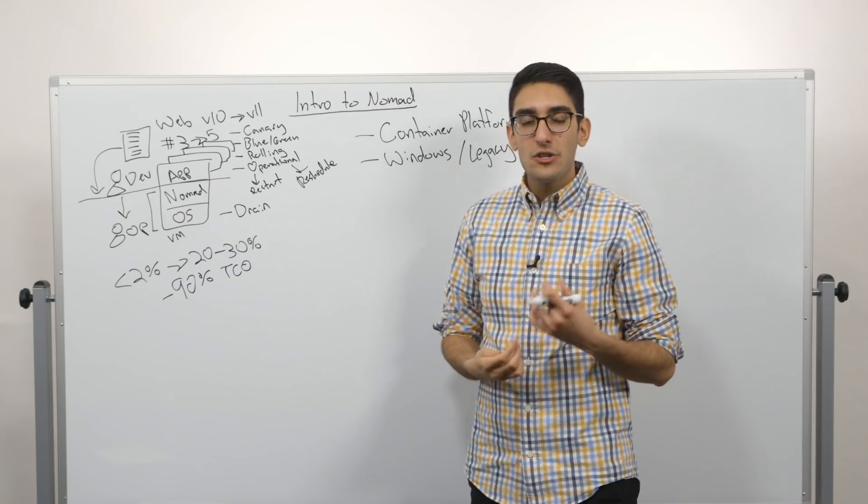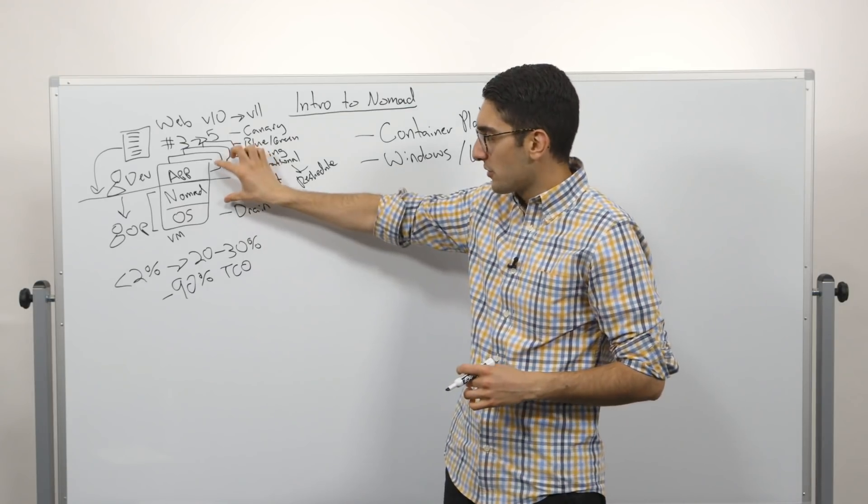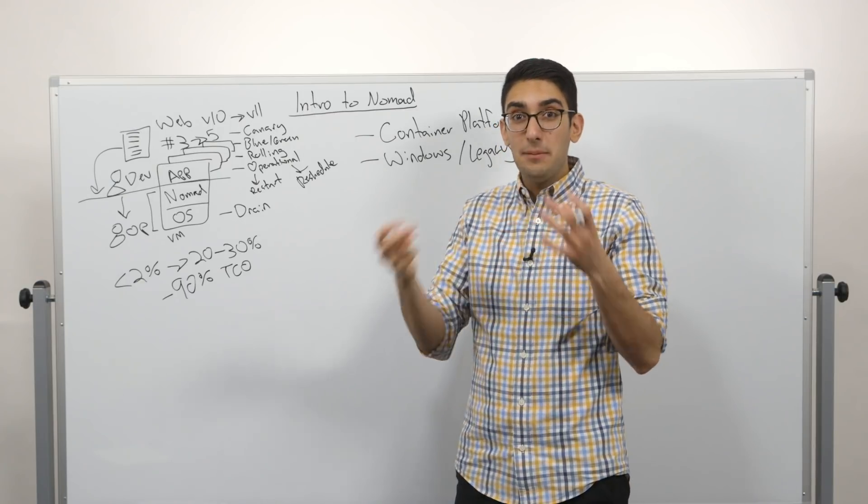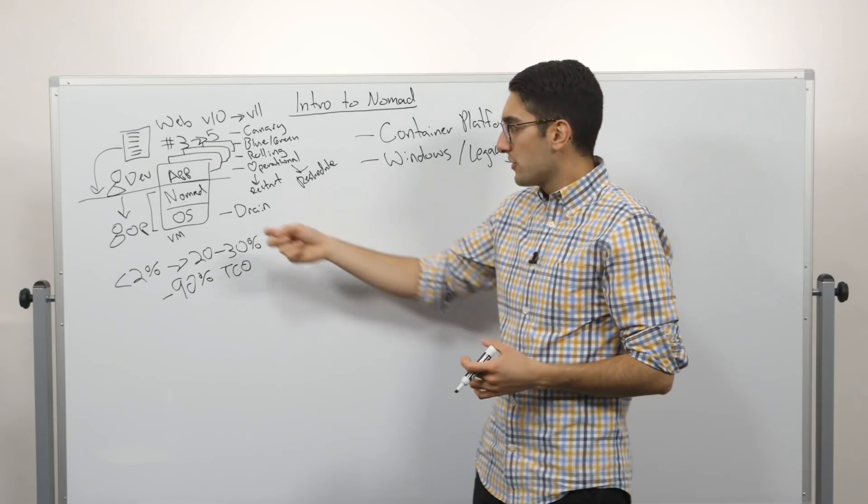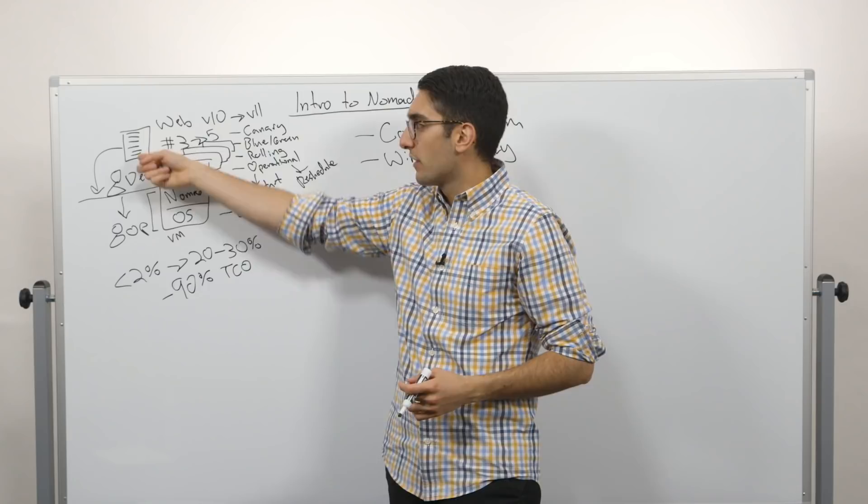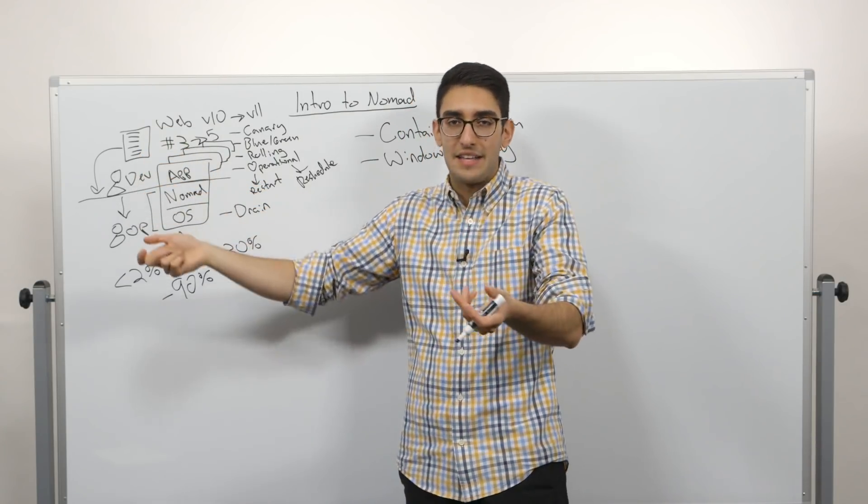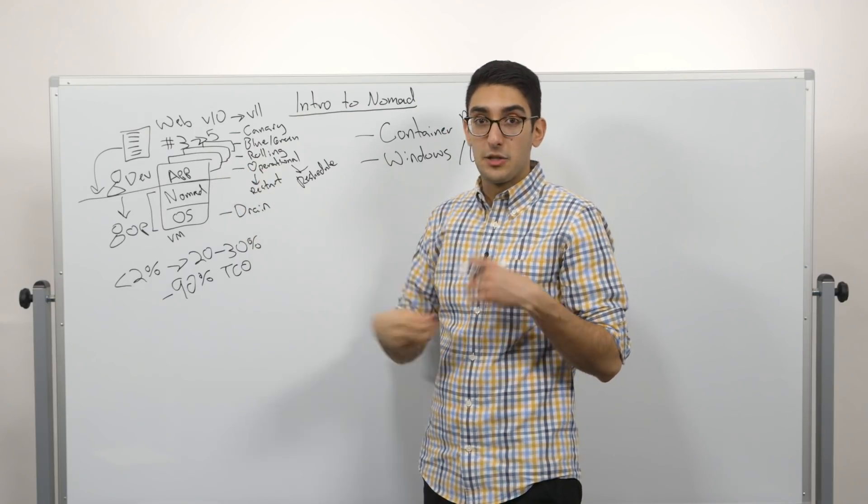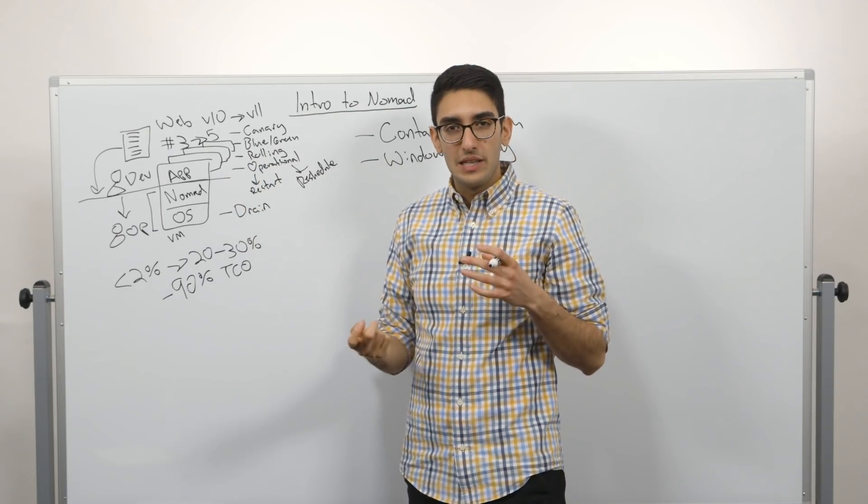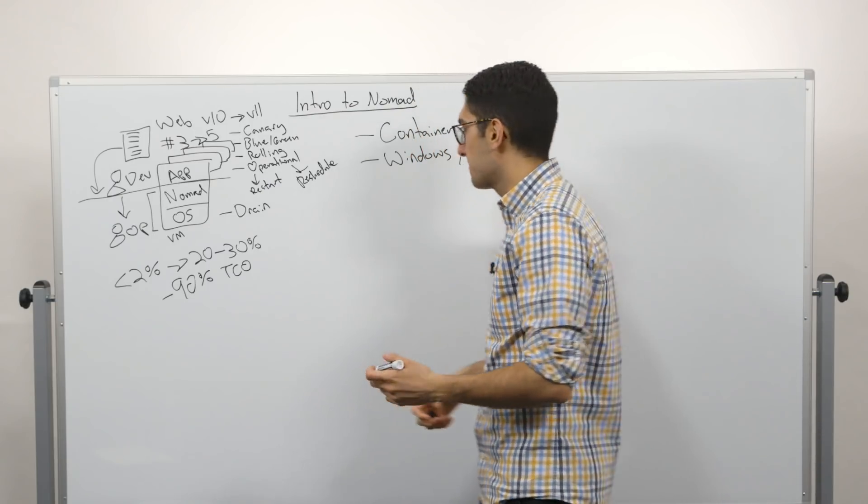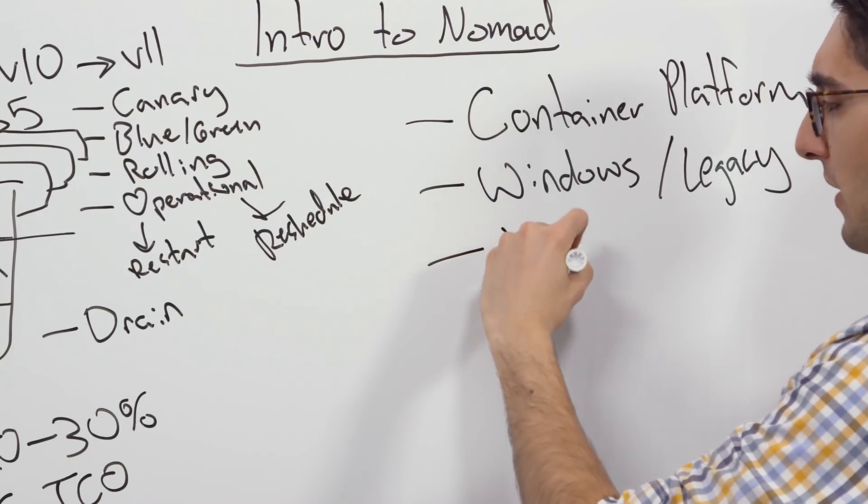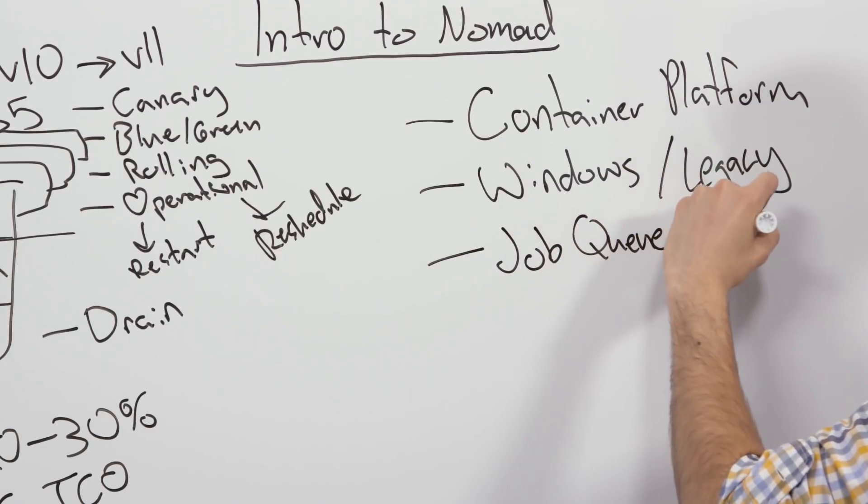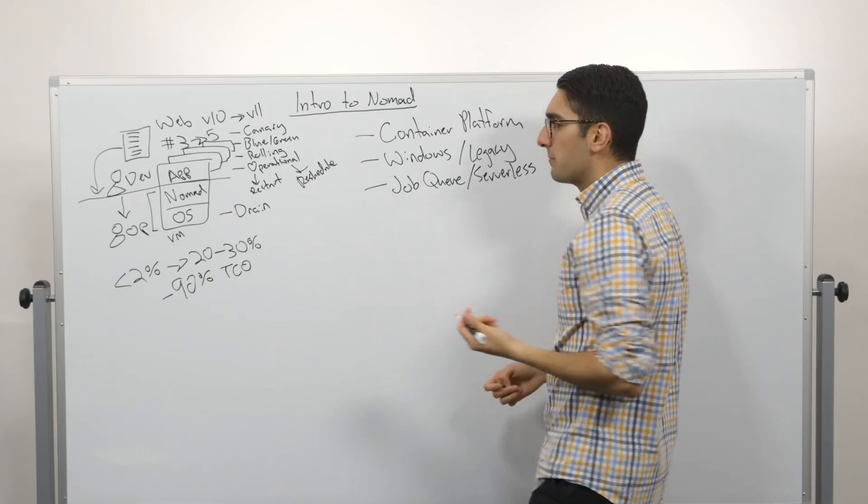Now, beyond that, the interesting thing is when we talk about this north and southbound API, what we're really providing is an API for scheduling work. So it could be that we're specifying our job in the form of this job file and providing that, submitting it manually to Nomad. But we could also programmatically consume Nomad's API to deploy jobs. And so this actually leads to a few interesting use cases. One of these is we might call it job queuing, or you might call it a serverless pattern of deployment, is when an event comes in.